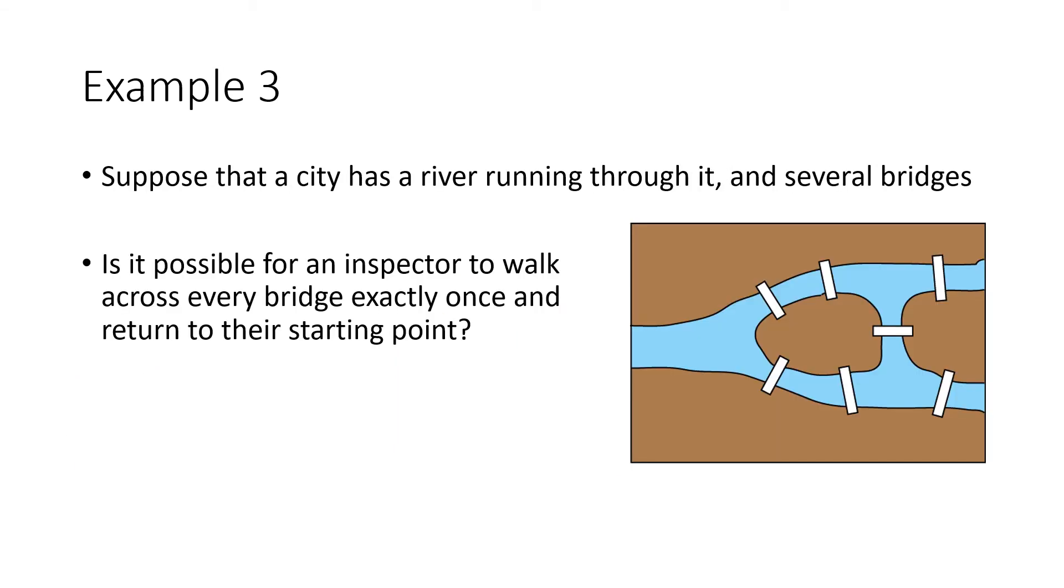All right, now this is a slightly different problem. Here, I didn't give you a graph, but we've given you a situation, one of those real-world situations. So we've got a city, and we've got a river running through the city, and we've got several bridges over that river. And so what we want to know is, is it possible for an inspector to walk across every bridge exactly once and return to their starting point? Well, that's essentially asking whether or not there's an Euler circuit. So if we label these different land masses, maybe I'll call this A, and I'll call this B, and I'll call this C, and I'll call this D.